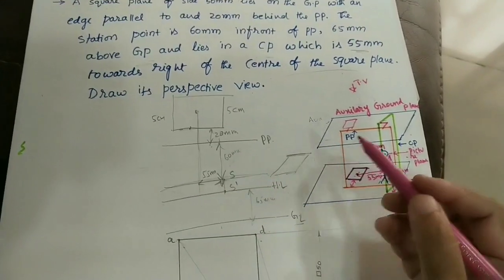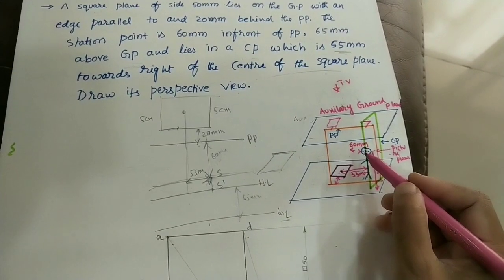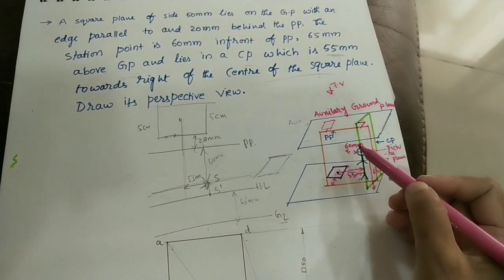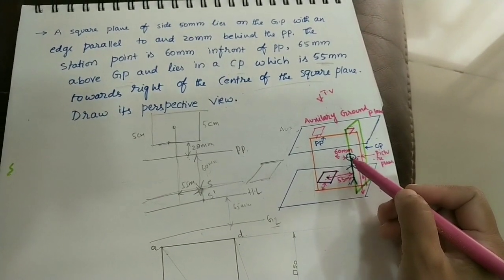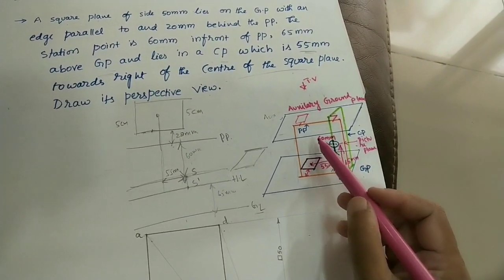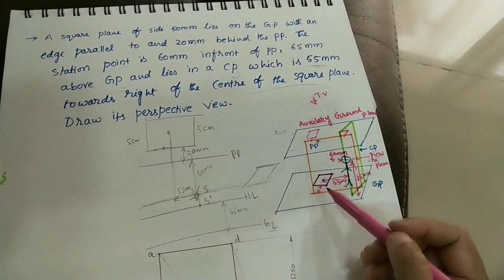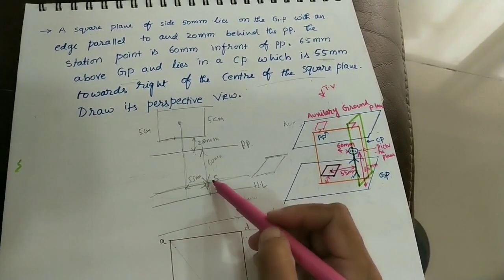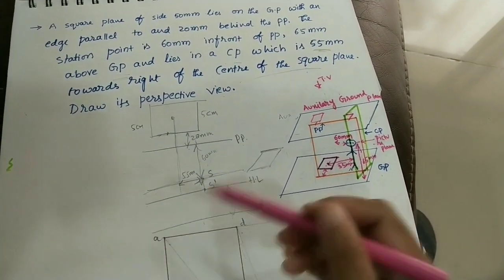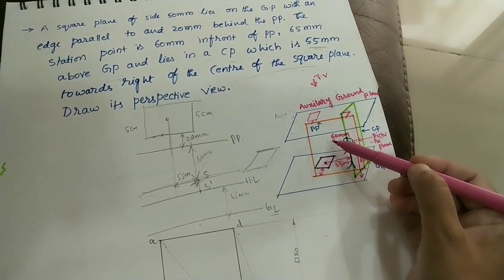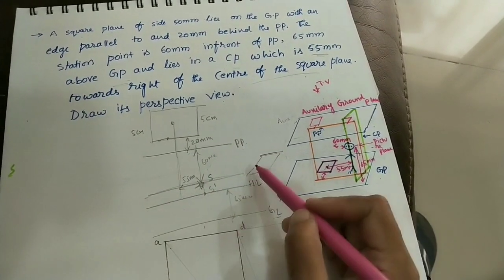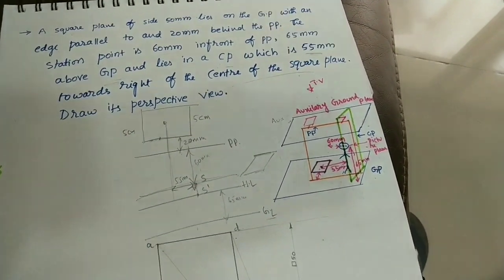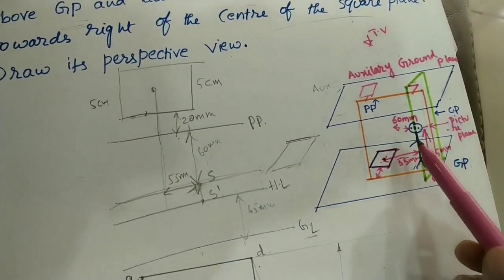Do some length of PP. This is the top view of the square. We also had to do the top view of the station point — station point means the observer. From the top, we are seeing this 60 mm gap from the picture plane. So from PP, take 60 mm in this direction. And from the center of the plane, take 55 mm — mark the intersection point. This is the station point in the top view — top view of the observer.